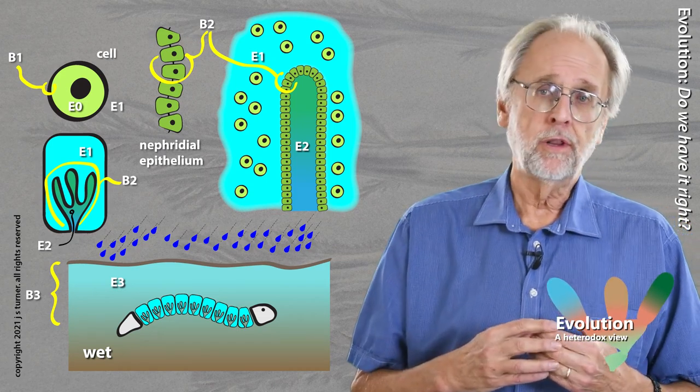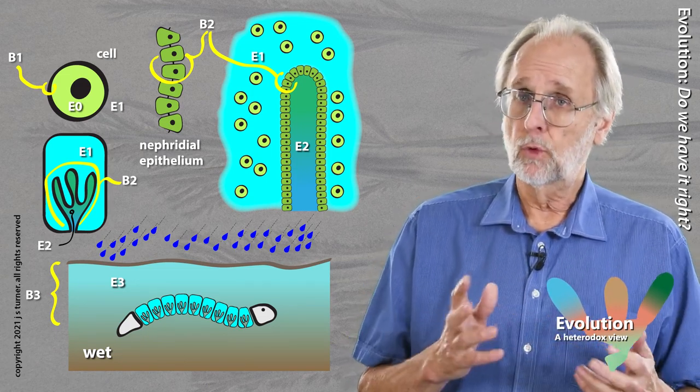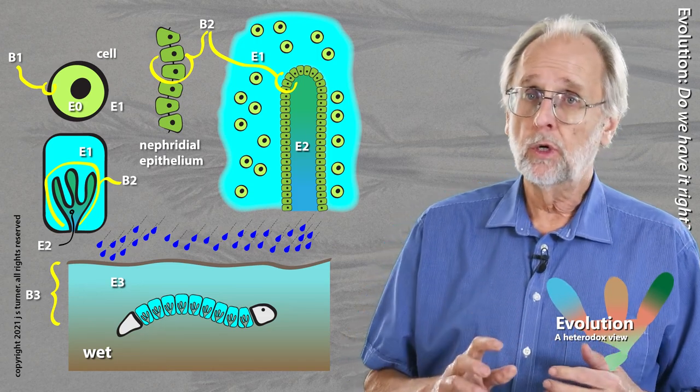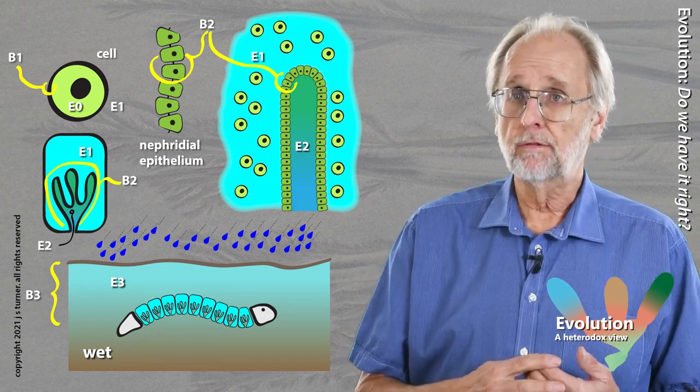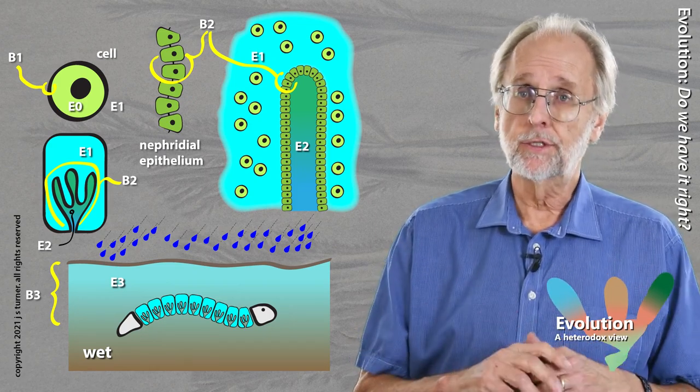And here's the important thing. This adaptive conspiracy is not simply the worm adapting to its environment. It's equal measure the worm adapting the soil to itself. Both worm and soil constitute an extended organism.